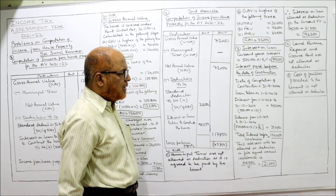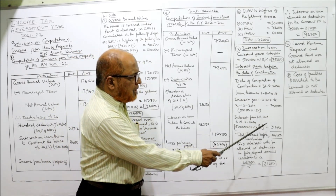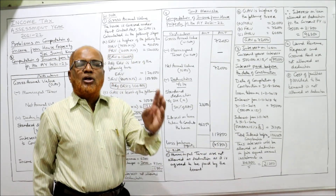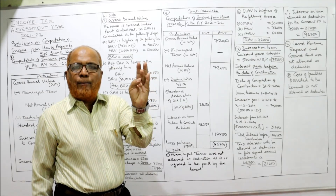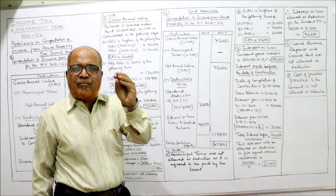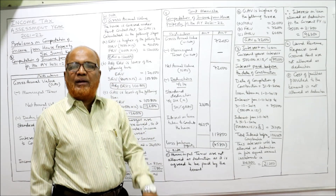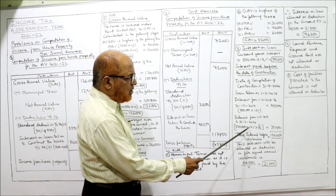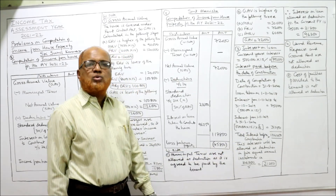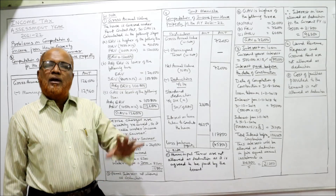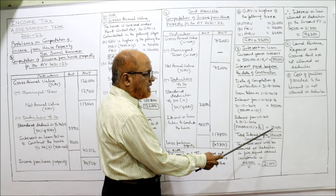From 1st November 2019 to 31st March 2020: November, December, January, February, March — five months. So we require interest for five months: ₹5 lakh × 15% × 5/12 = ₹31,250.